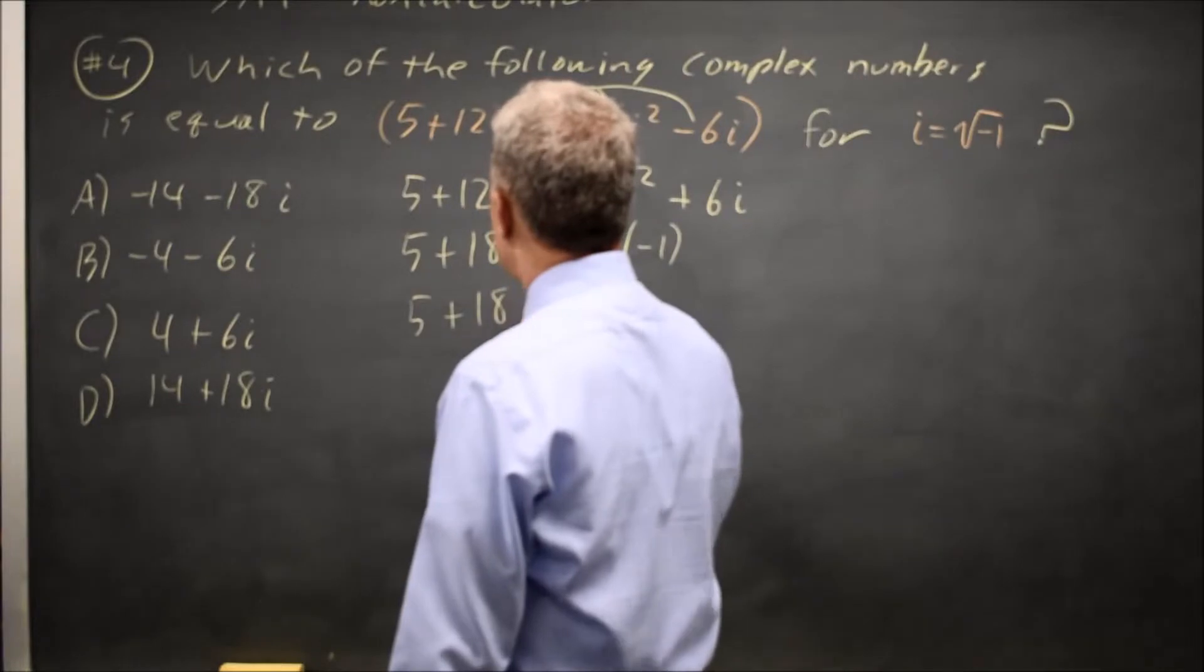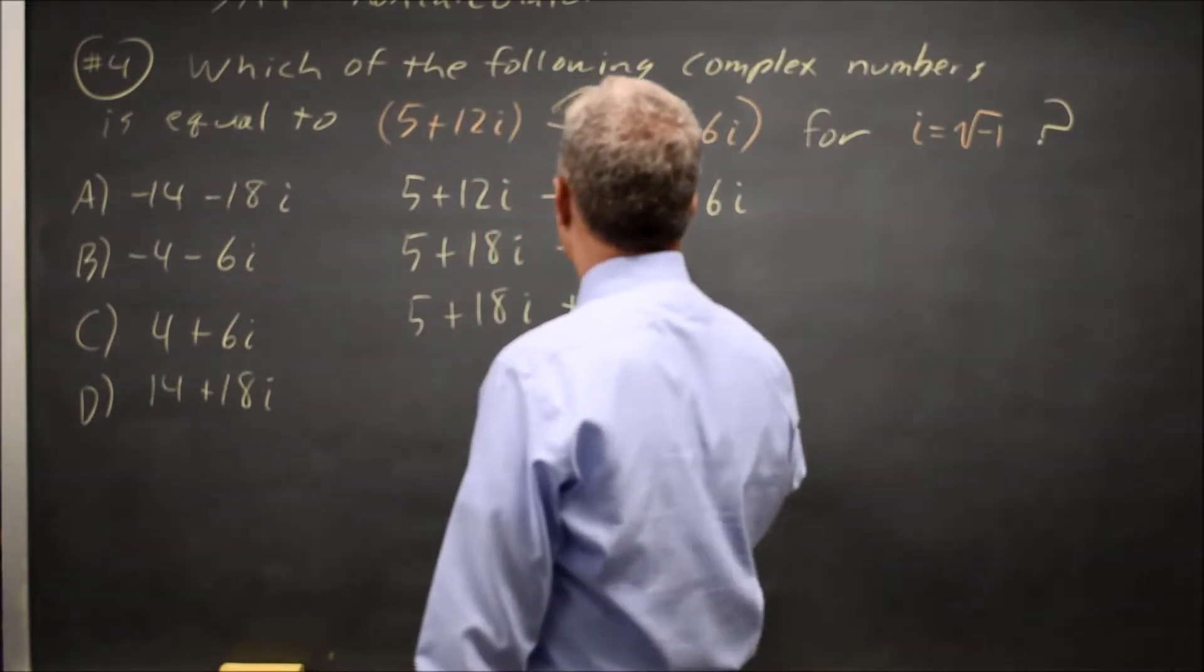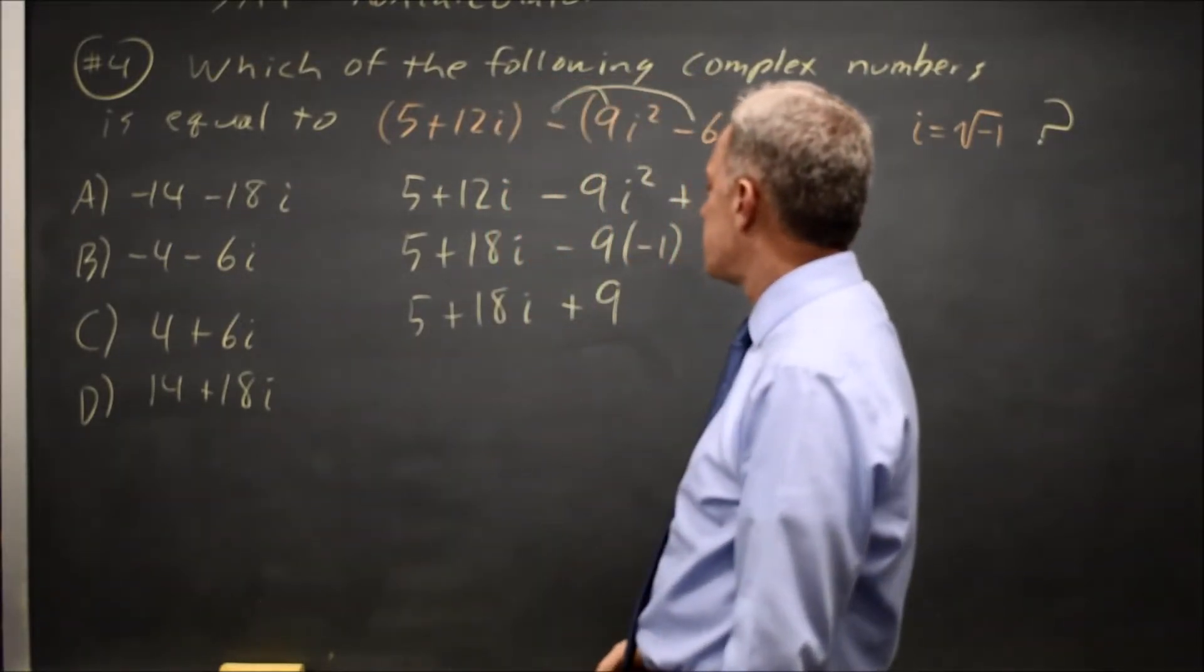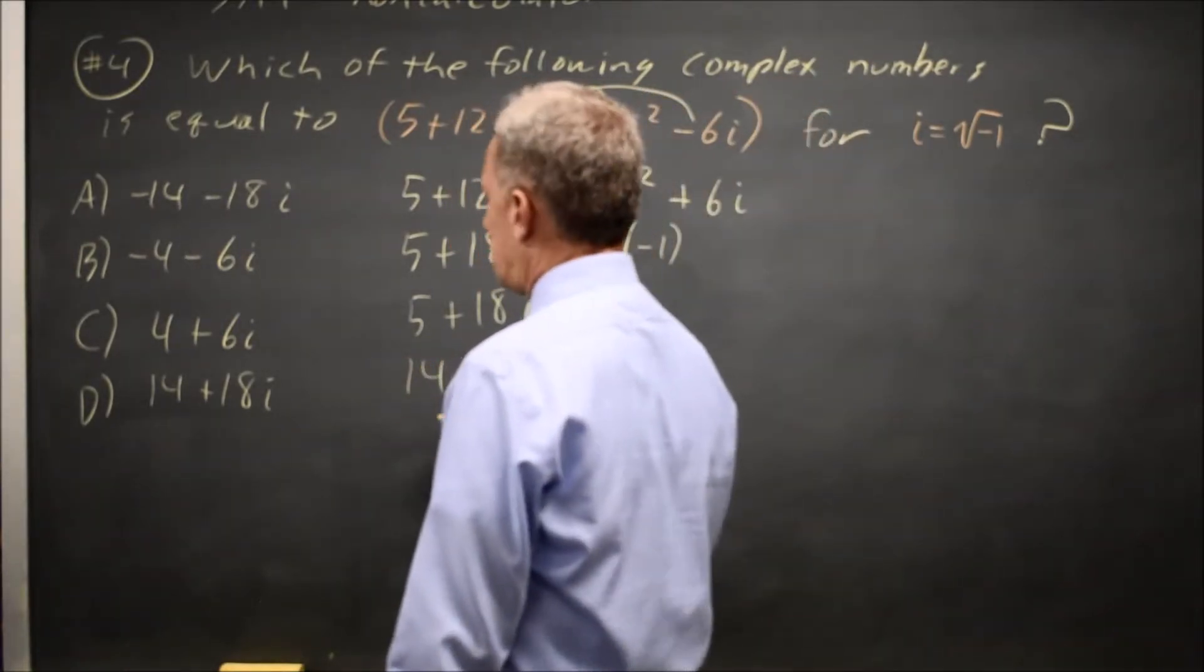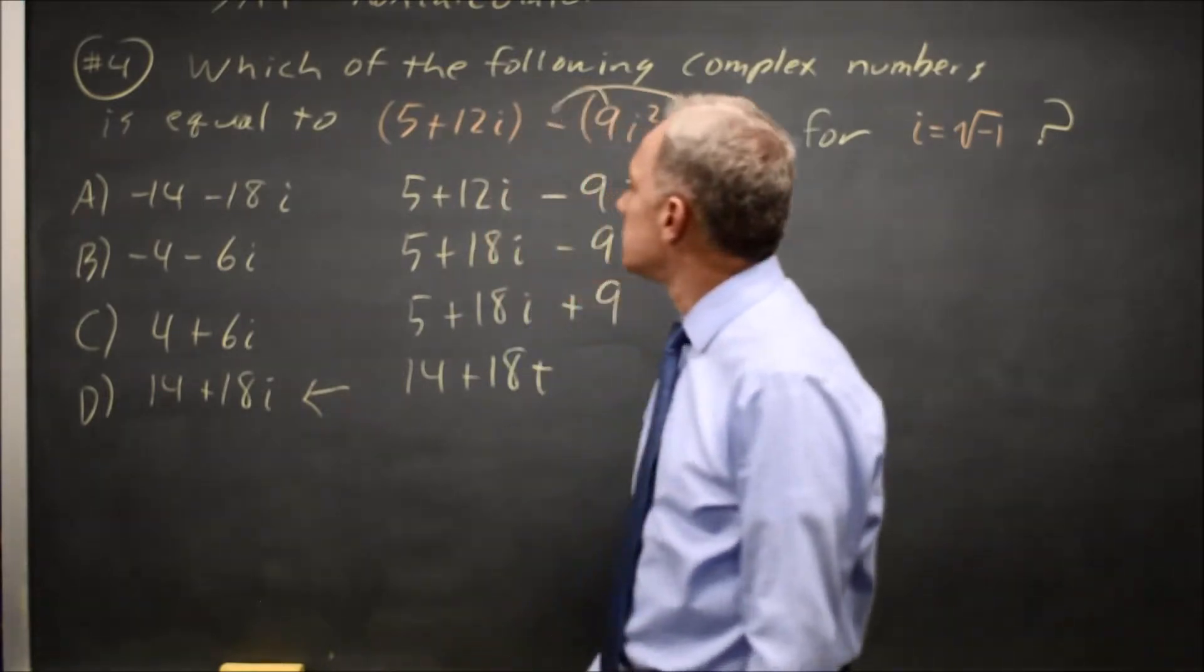That's five plus eighteen i plus nine, because negative nine times negative one is positive nine. Five plus nine is fourteen plus eighteen i. So the correct answer would be choice D.